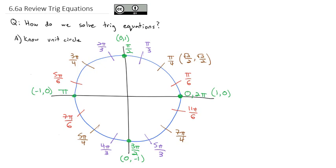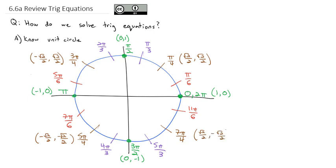In the second quadrant, the x is negative, so at 3π/4 we have (−√2/2, √2/2). In the third quadrant, 5π/4, they're both negative: (−√2/2, −√2/2). And in the fourth quadrant, only the y is negative, so at 7π/4 we have (√2/2, −√2/2).